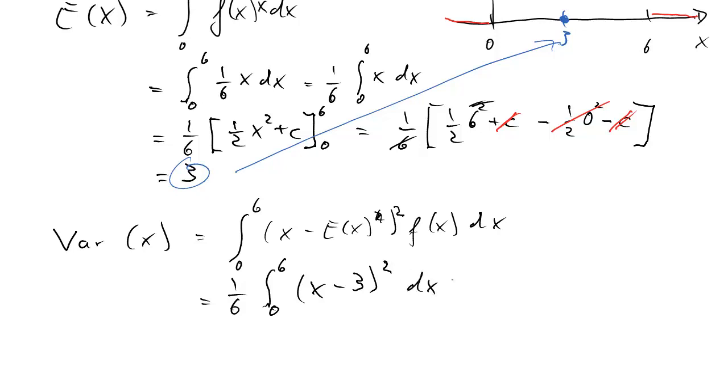To integrate this term, I prefer to get rid of the brackets. So we have the integral of the squared value, which is x squared minus 2 times 3x, so that is 6x, plus 9, dx. We need to find the integral of this and we have 1 over 6 in front. We need to evaluate that at 0 and 6.